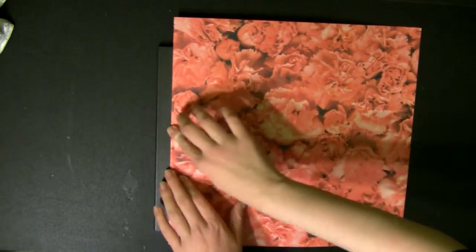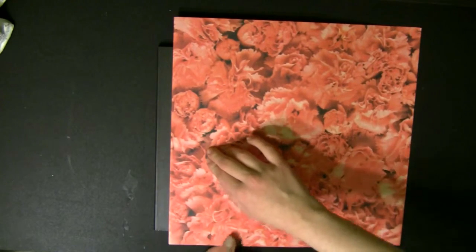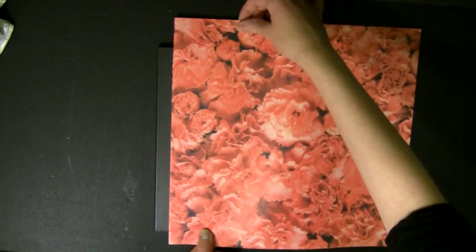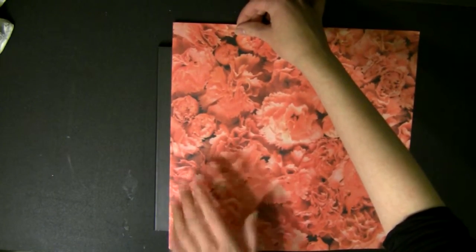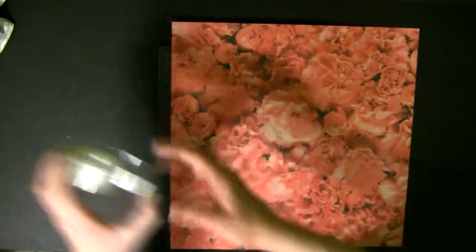All right, so now I'm going to lay my paper where I want it, which is right against the binding of the notebook. So just figure out what type of paper you want. If it's a pattern paper and it has a bottom, make sure it's good.